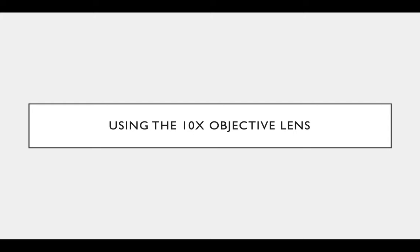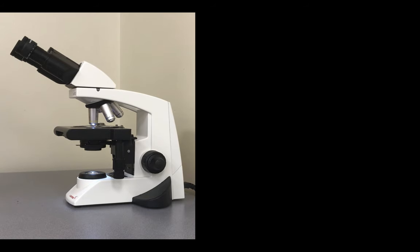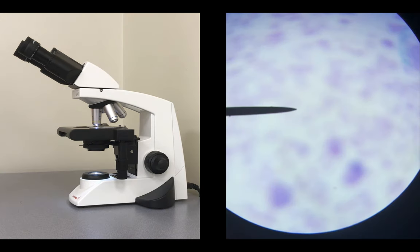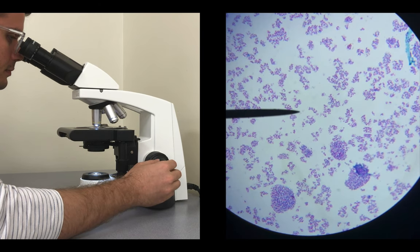Alright, that's the 4x objective lens — now we can use the 10x objective lens. This lens is going to magnify an object 10 times in addition to the 10 times from the ocular lens, so that's a total of 10 times 10, or 100 times magnification. Switch between the objective lenses using that nose piece. We're only going to use the fine knob from now on to bring our specimen into focus.